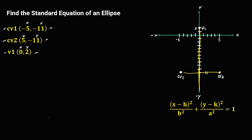The point of intersection of the vertex and co-vertices is the center. To find the coordinate of the center, x is 0 and y is negative 11. Therefore, from the coordinate of the center, h is 0 and k is negative 11.